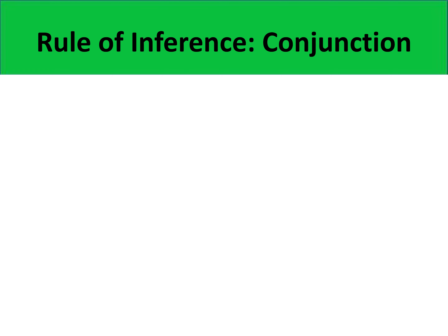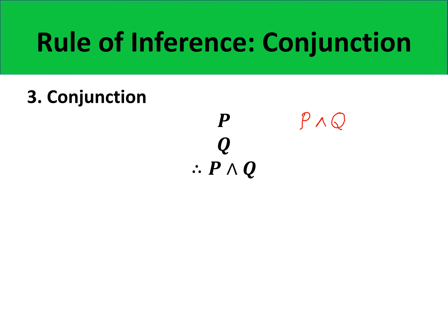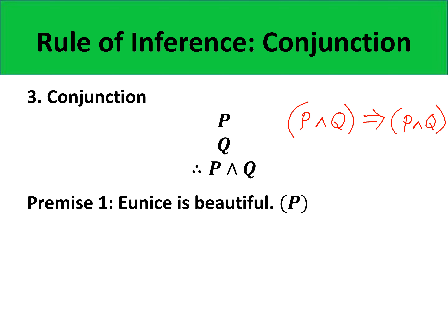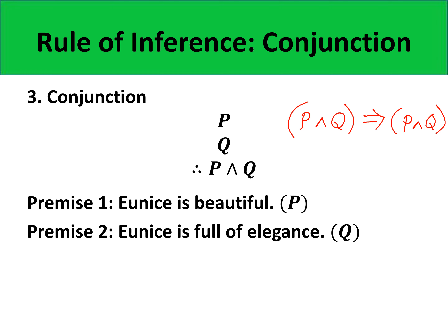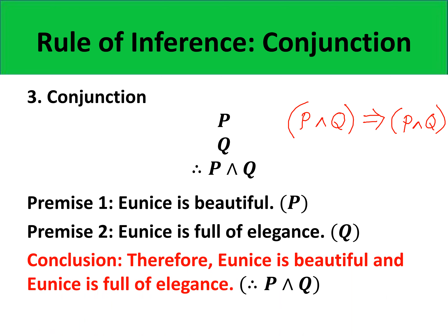The next rule of inference is conjunction. Conjunction takes the form P as premise one and Q as premise two, with the conclusion P and Q. The propositional form of this argument is: P and Q implies P and Q, which you can verify is a tautology. For example, premise one: Eunice is beautiful (P). Premise two: Eunice is full of elegance (Q). So the conclusion using conjunction is P and Q: Eunice is beautiful and Eunice is full of elegance.